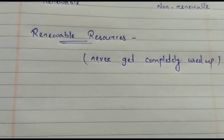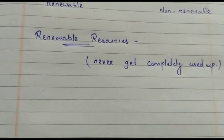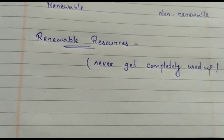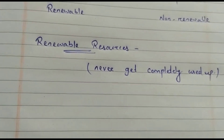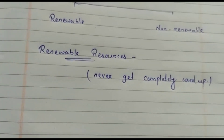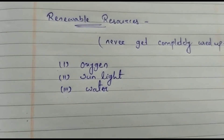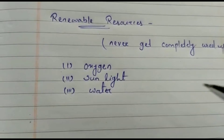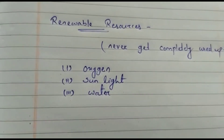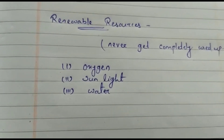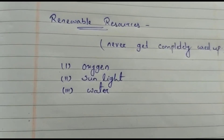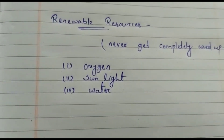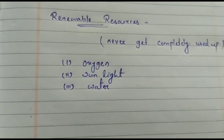Renewable resources are the resources which never get completely used up and get replaced within a short span of time. For example, oxygen — it never gets completely used up because plants continuously produce oxygen during photosynthesis. Similarly, sunlight: the sun gives us a constant source of energy, and since the sun is expected to stay around for the next 5 billion years, we can call it a renewable resource.